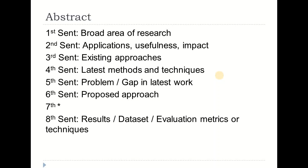To write a good concise abstract, here are the sentences you should write in exactly the same order. In the first sentence, introduce the broad area of your research — this is the point from where you should start your literature study, and you should keep in mind how well known that broad area is in the research community. For example, if you have proposed an improved classification for fake news detection, you may start with classification, since classification is a very well-known type of technique.